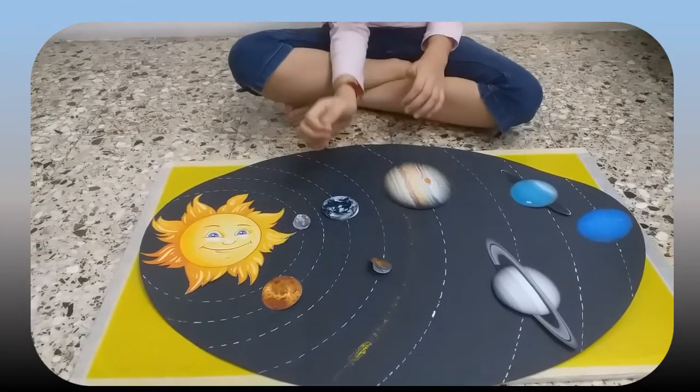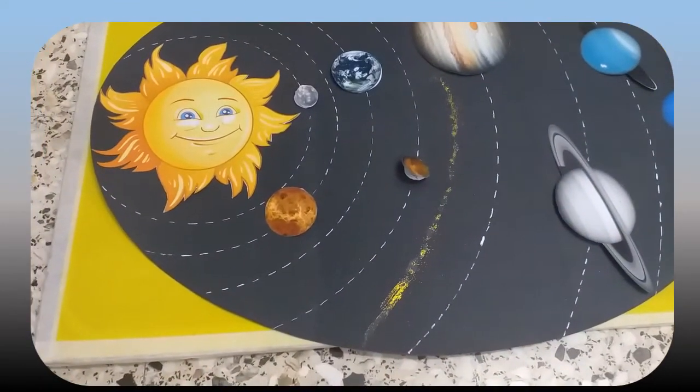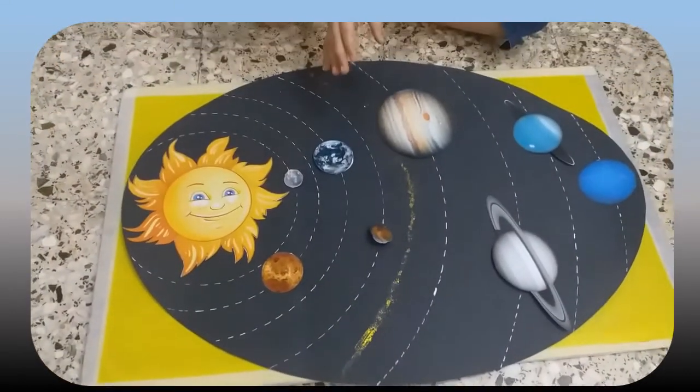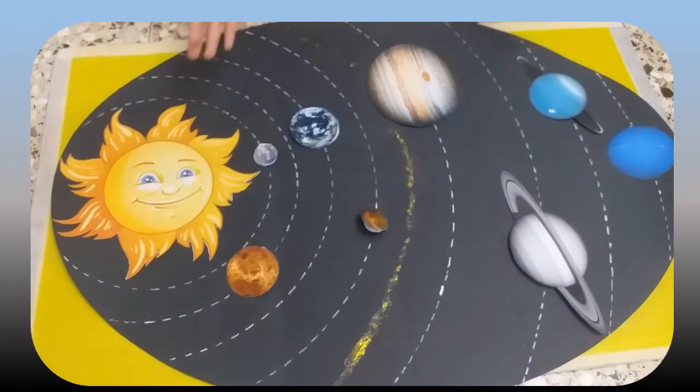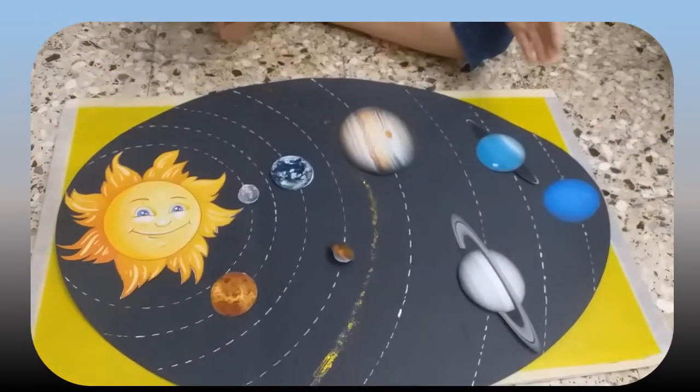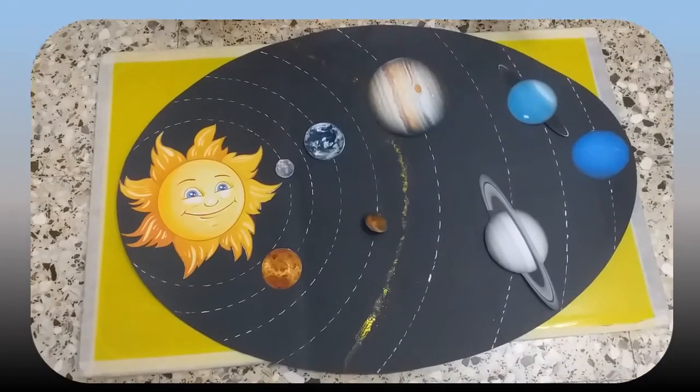As you can see, here is some glitter. That represents the belt of asteroids between Mars and Jupiter. And here are the orbits of these planets. This is our solar system. So now we will close it.